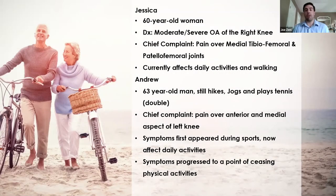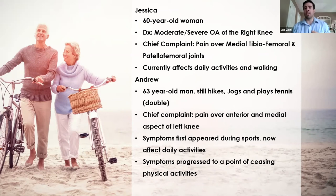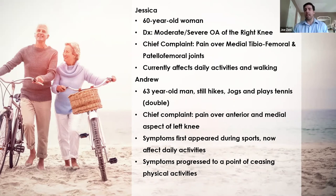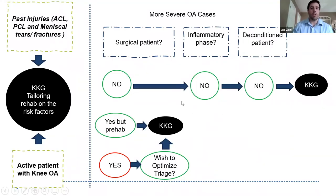Then we have knee osteoarthritis. Even though it's a singular diagnosis, people look very different. Jessica is a 60-year-old woman with moderate to severe knee OA who has difficulty with daily activities and walking. On the other end we have Andrew, a 63-year-old male still hiking and participating in higher-level sports, with pain in the anterior medial aspect of the knee that developed during sports and is now bleeding into daily activities, causing him to cease some higher-level physical activities.